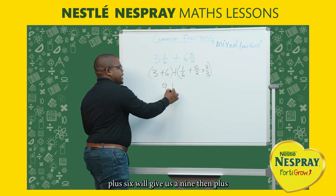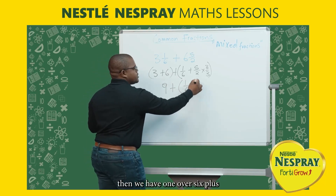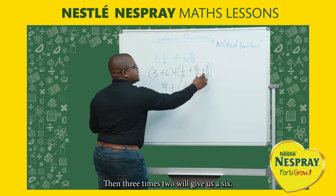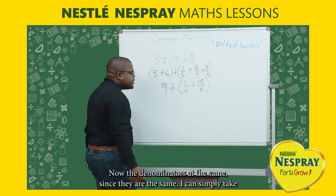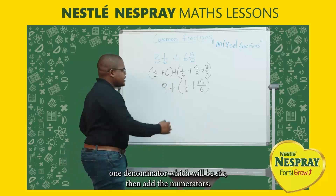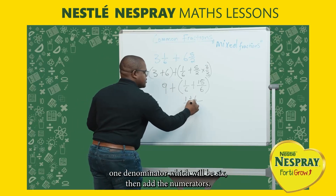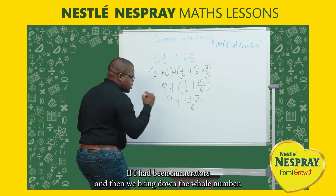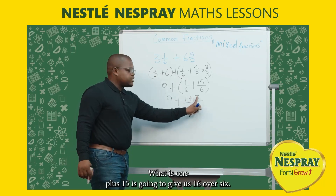Let's check: 3 plus 6 gives us 9, then we have 1/6 plus — three times 5 gives us 15, and three times 2 gives us 6. Now the denominators are the same. Since they are the same, I can simply take one denominator, which is 6, then add the numerators.